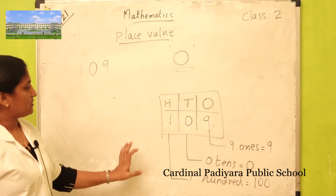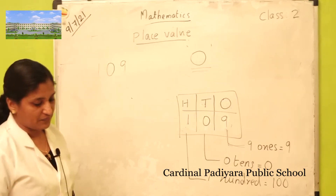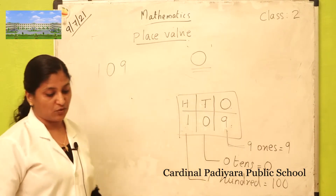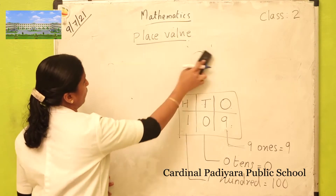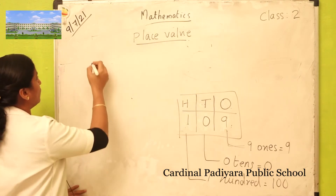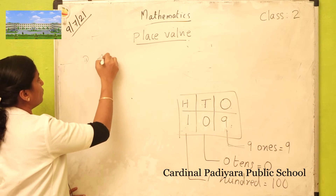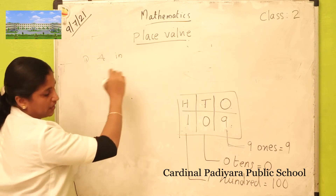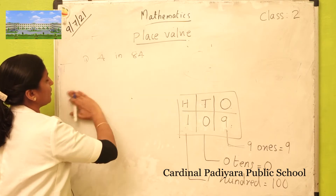Now that you have understood place values, try this problem in your textbook. Give the place value of — question number A: four in 84.